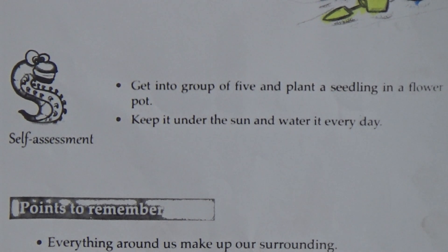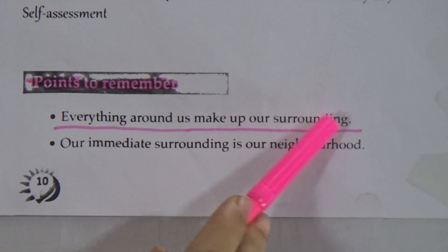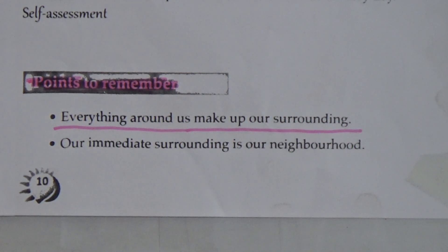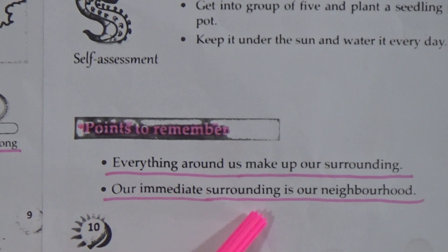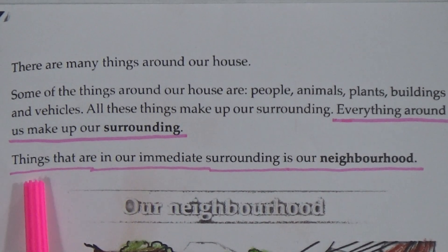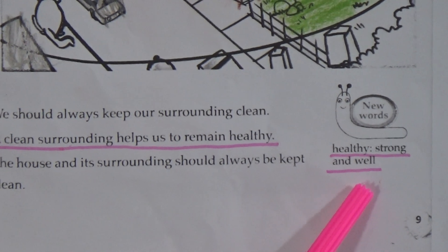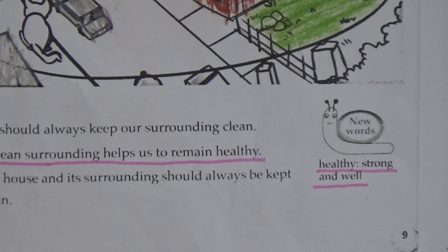Points to remember — this is a very important portion. First: everything around us makes up our surrounding. Second: things that are in our immediate surrounding is our neighborhood. Our immediate surrounding is our neighborhood. Also remember: the meaning of healthy — healthy means strong and well.